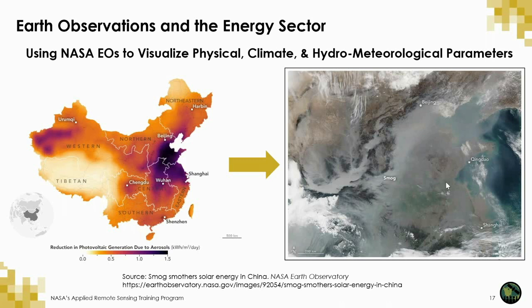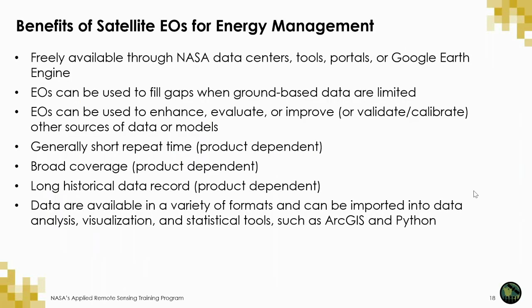One of the most important benefits of NASA Earth observations is the ability to visualize physical, climate, and hydrometeorological parameters to inform energy management decision-making. NASA products were used in a model to calculate the impact of aerosols and clouds on surface radiation by examining the amount of solar energy on Earth's surface, demonstrating the power of a good visualization. Before getting into more detail on how NASA Earth observations can be used in energy management, let's talk about several key benefits.